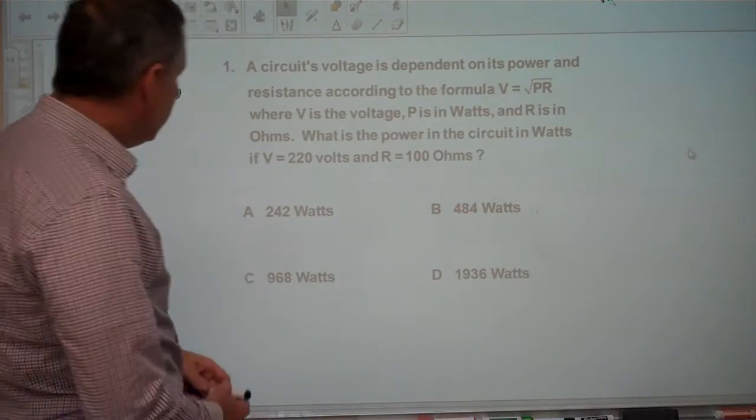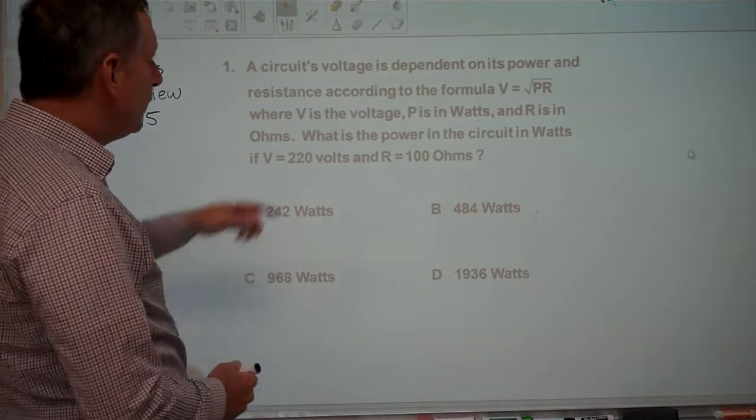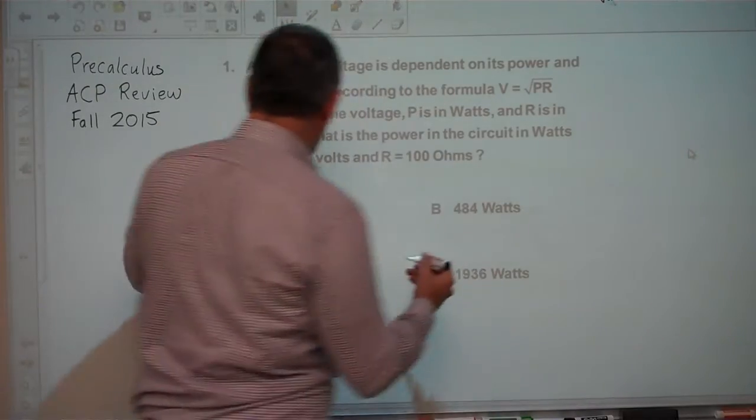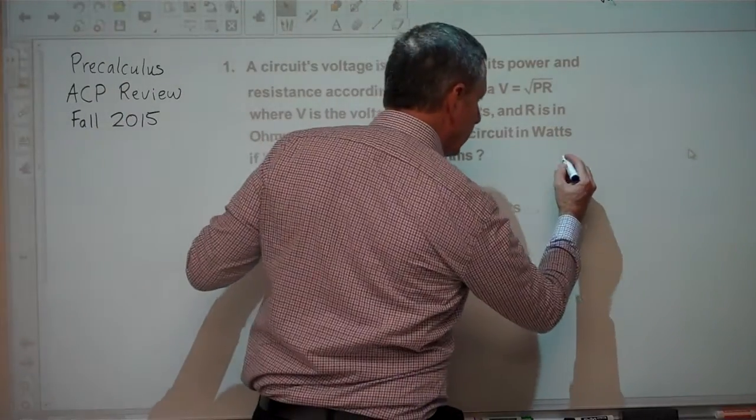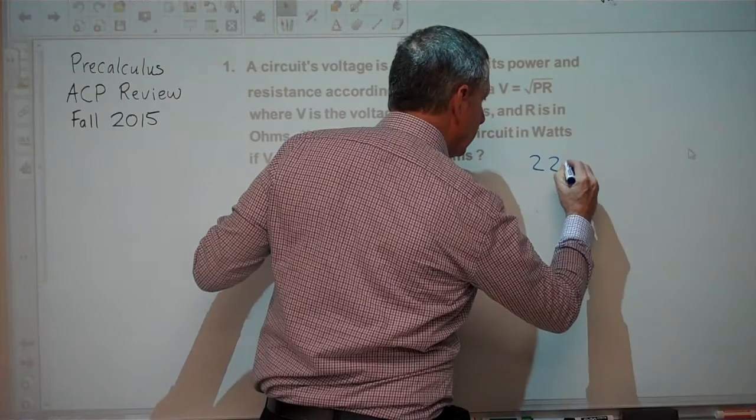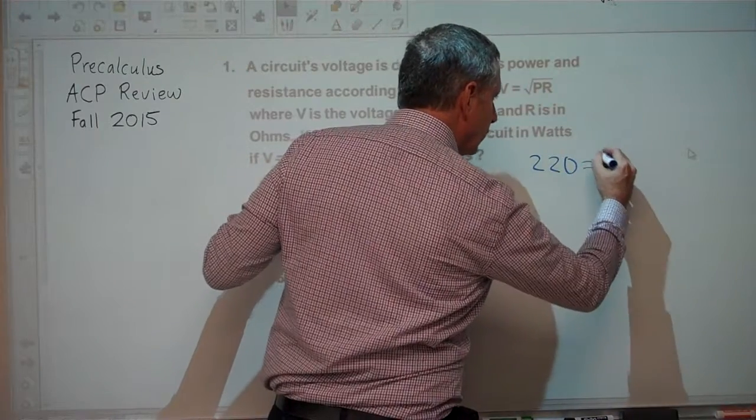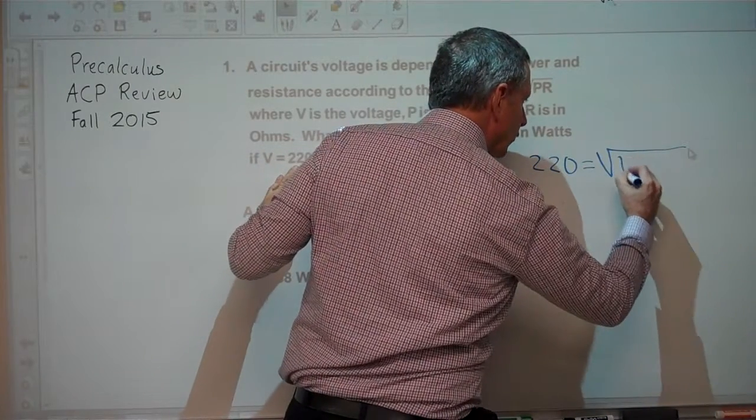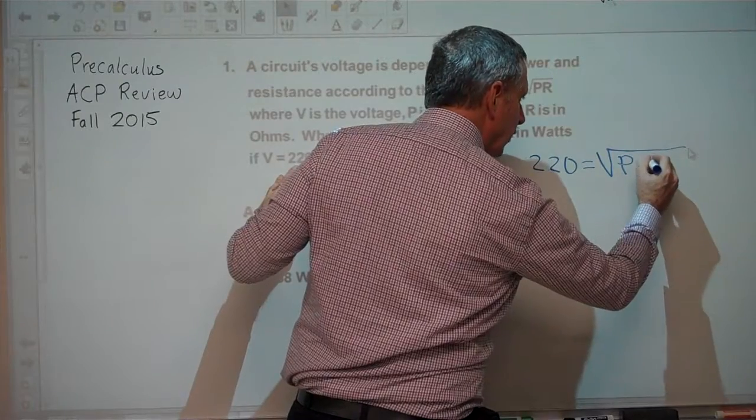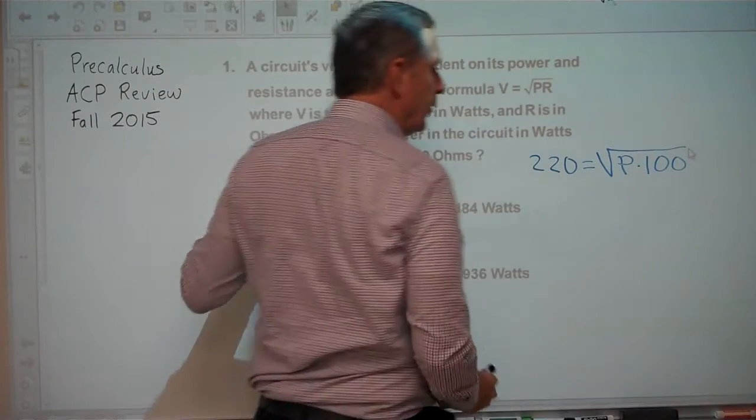For this, we can use our formula. We know that V is 220 volts, so we have 220 equals the square root of our power, which we do not know, times our resistance, which is 100 ohms.